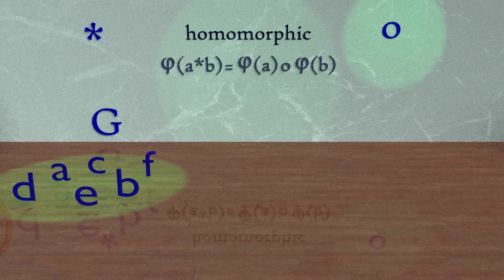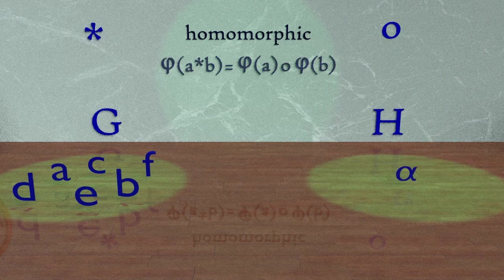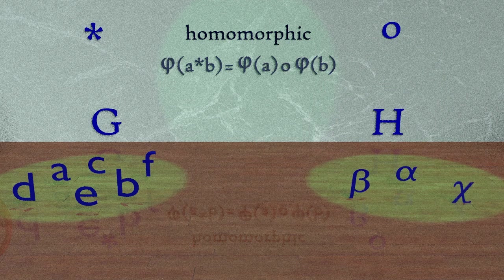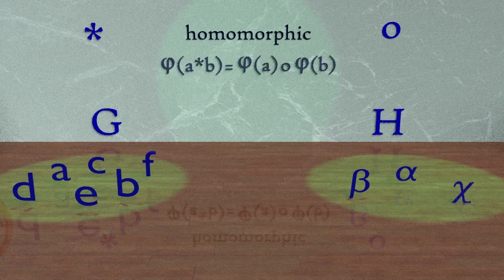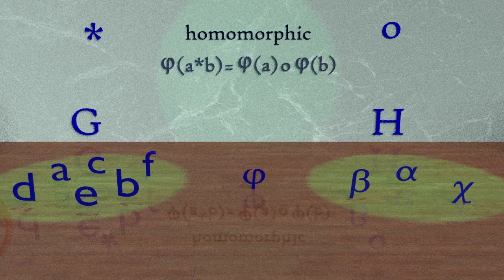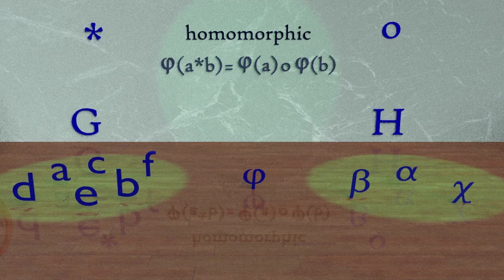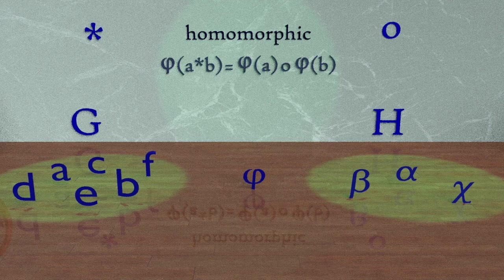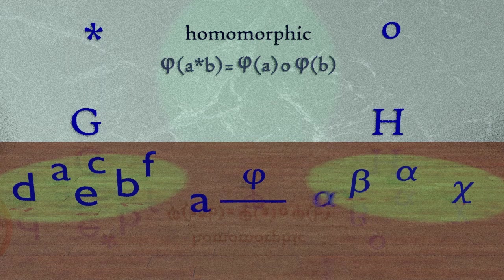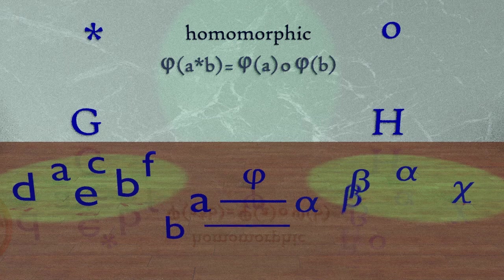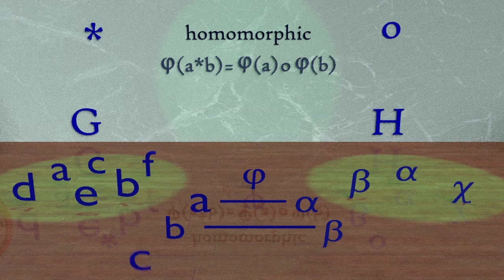And we are going to compare G to the set H on the right with the elements alpha, beta, and chi. Our mapping we will again call phi, and into phi we will put an element from G, and it will map that element to one specific element in H, such as A maps to the element alpha, B maps to the element beta, and C maps to the element chi.